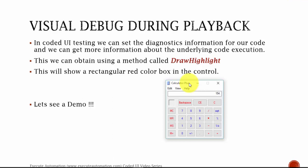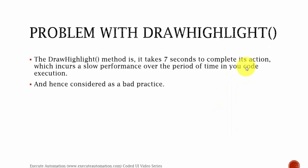This is visual debugging during playback. The problem with the draw highlight method is it takes seven seconds to complete its action, which incurs slow performance in your code execution, and is hence considered one of the bad practices in coding. If you try to highlight a particular button, it just takes seven seconds to perform that operation, and you're not going to view that particular operation visually every time.